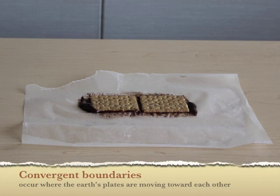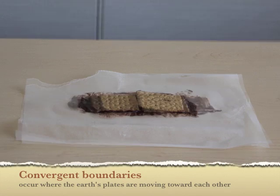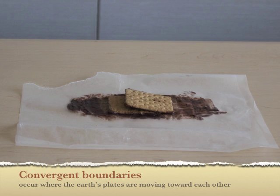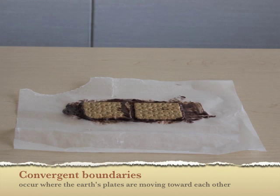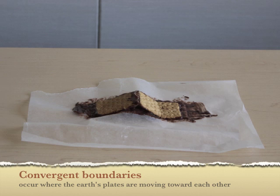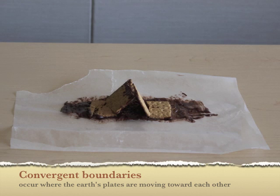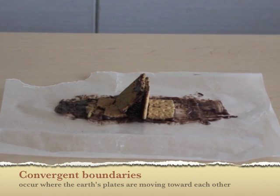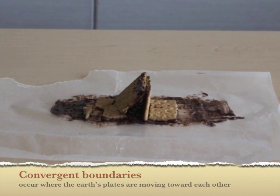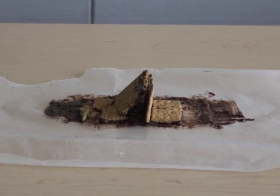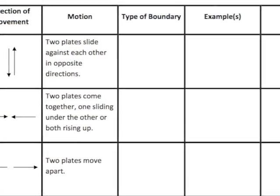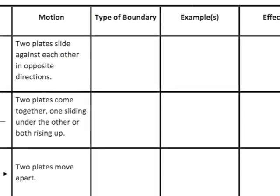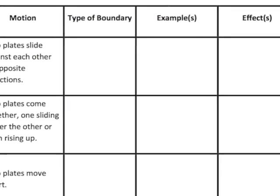Ask the students to push the graham crackers back together. Instruct some pairs of students to let one cracker slide under the other, and other pairs to bring them together with some force, causing some cracking and breaking, but causing them both to rise up into a mountain form. Explain to the students that this is an example of convergence or coming together. Have students fill in the related blocks in the worksheet, listing the Rocky Mountains, the Himalayas, and the Mariana Trench as examples. Have students list mountain ranges, trenches, and volcanoes under effects.